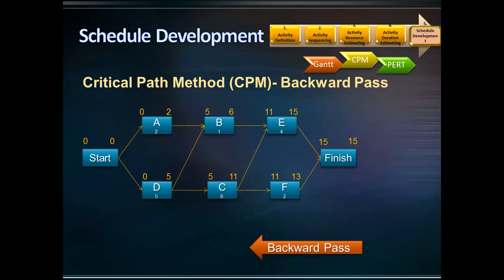Now let's examine the backward pass. For the backward pass, we start from the finish milestone, change the direction of arrows, and move backwards. In this example, the latest finish date for the finish milestone is 15 days. Moving backwards, the latest finish date of activity F is 15 days. The late finish date for activity E is also 15 days. The late start for activity E is 15 days minus its duration of 4, which equals 11 days. Following the same calculation, the late start for activity F is 13 days.